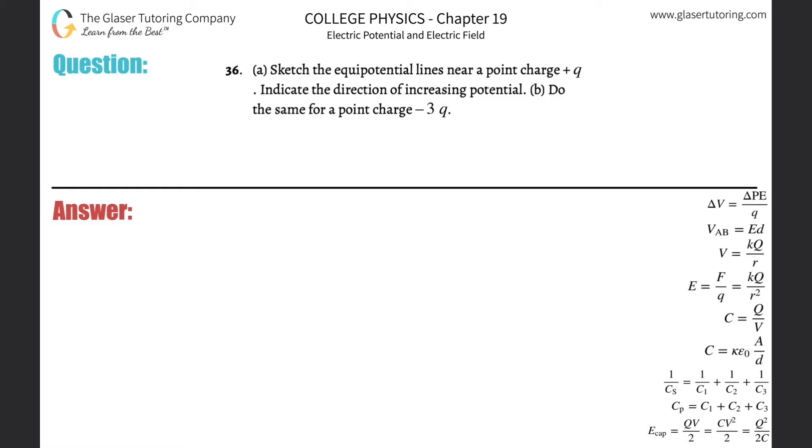Number 36, letter A: Sketch the equipotential lines near a point charge positive q and indicate the direction of increasing potential. Alright, so let's say here is q, it's positive, and the equipotential lines will be simply drawn as concentric circles.